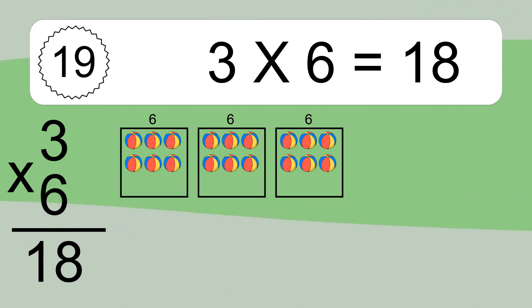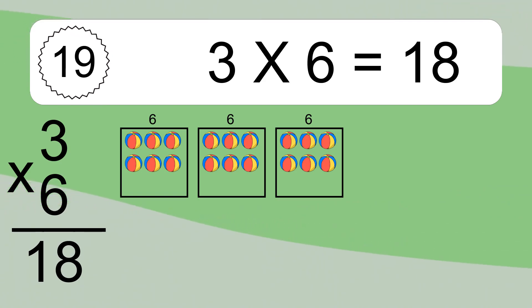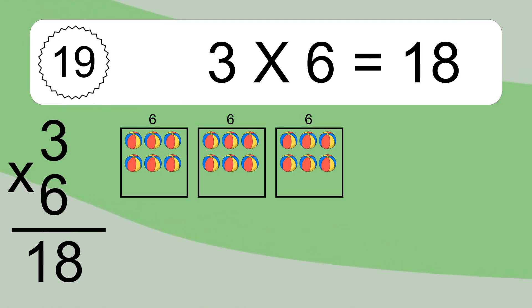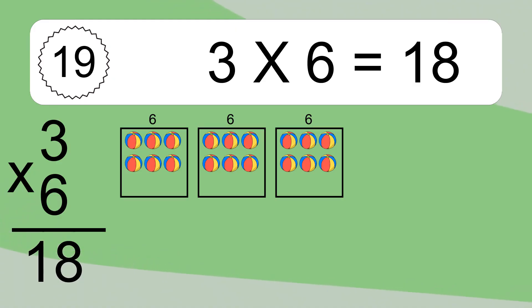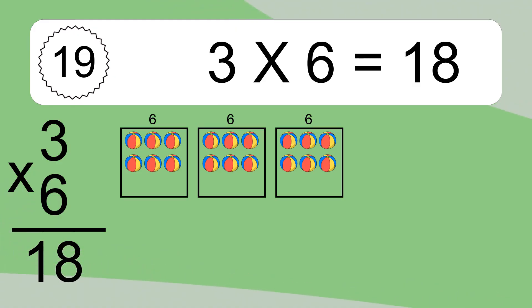We have 3 boxes, and each box has 6 colorful balls inside. If you count all the balls in all the boxes together, you will have 3 times 6 balls. This equals 18 balls.